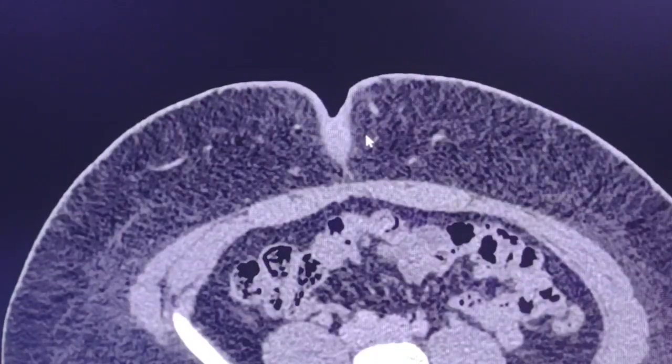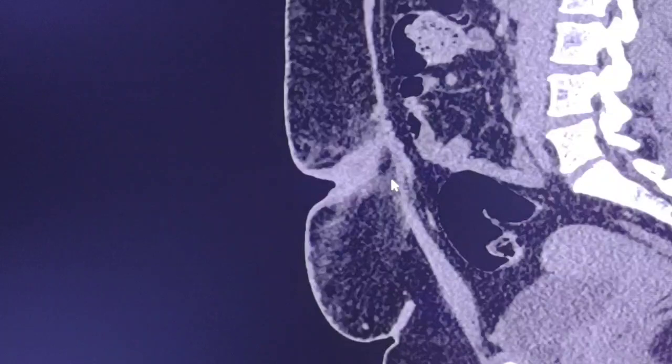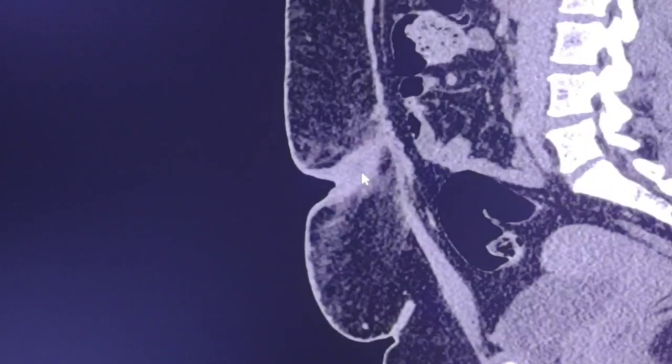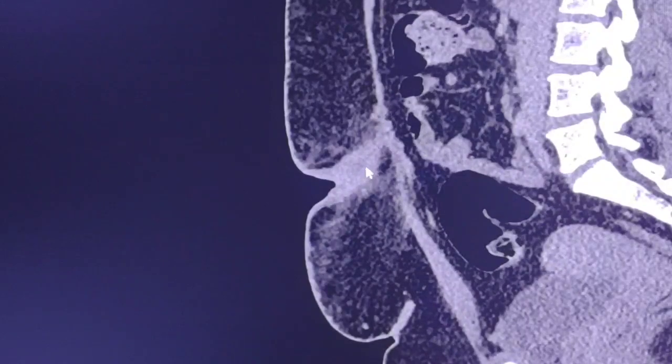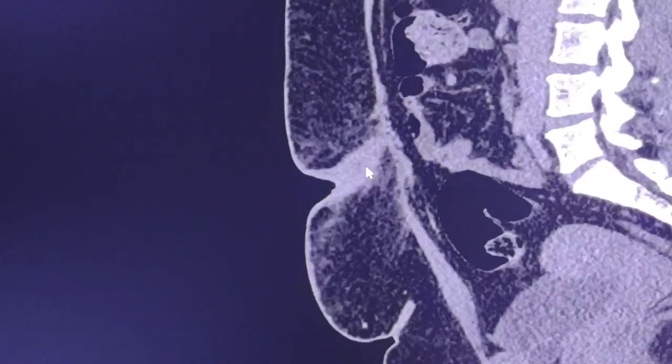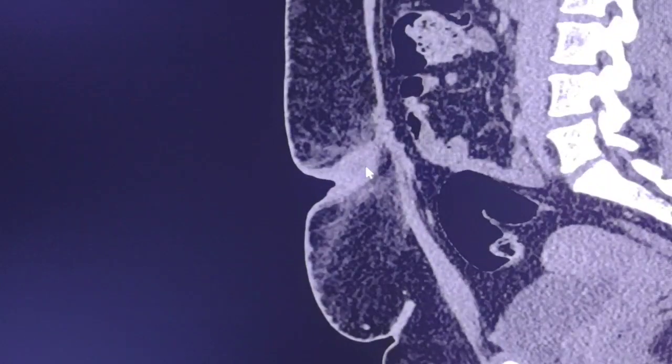Again in sagittal views as you can see there is abnormal appearance of this region. And this is a case of omphalitis.